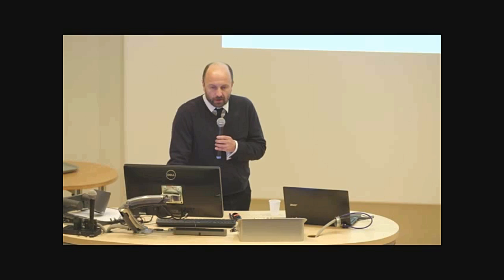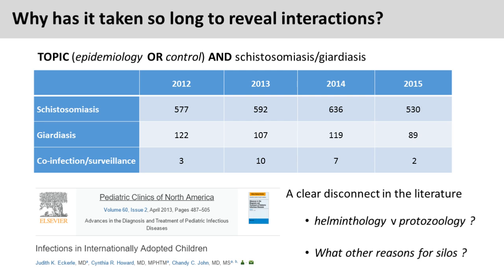When we ask the question, both parasites - Giardia and schistosomiasis - are incredibly common, and yet when we look at the scientific literature, there isn't a massive amount of crosstalk between the two diseases. A very cursory example of literature from 2012 to 2015 shows studies on the epidemiology and control of schistosomiasis dominate. This is not specific to Africa; it might be considered a global appraisal. Whilst Giardia is incredibly cosmopolitan in its distribution, we see fewer studies, and more importantly, we don't see much dialogue between schistosomiasis and Giardia formally.